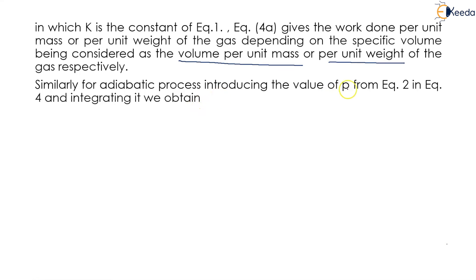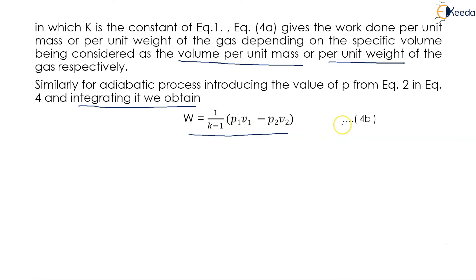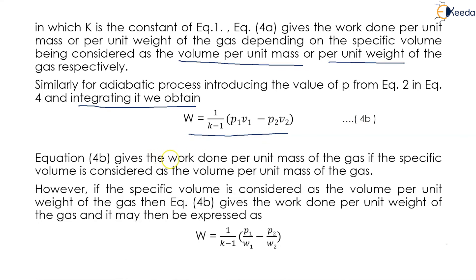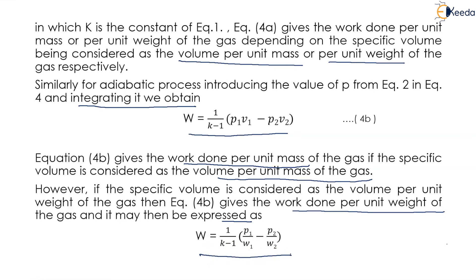Similarly, for the adiabatic process, introducing the values of P from Equation 2 into Equation 4 and integrating, we obtain W = (1/(k−1)) · (P₁V₁ − P₂V₂). This is Equation 4b. If specific volume is considered as volume per unit mass, Equation 4b gives work done per unit mass of the gas, expressed as W = (1/(k−1)) · (P₁/ω₁ − P₂/ω₂).